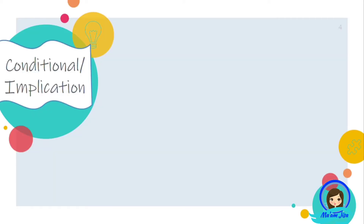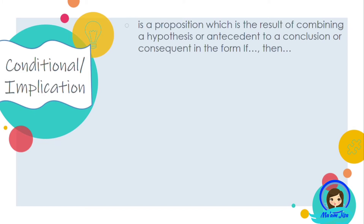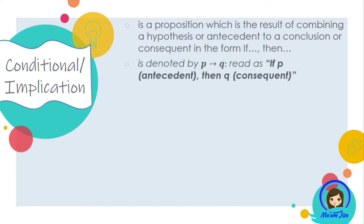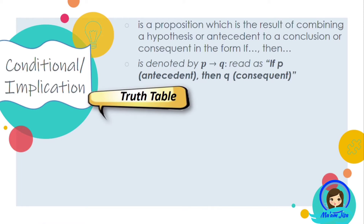Conditional proposition is also known as implication. This is a proposition which is the result of combining a hypothesis or antecedent to a conclusion or consequent in the form if-then. So the conditional statement is also known as an if-then statement. It is denoted by the symbol — we have here an arrow — and it's read as: if P, where P is the antecedent, then Q, where Q is the consequent.